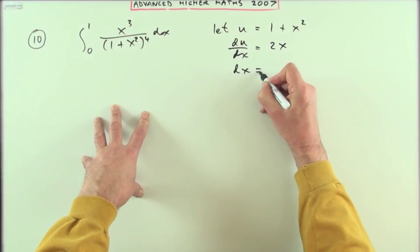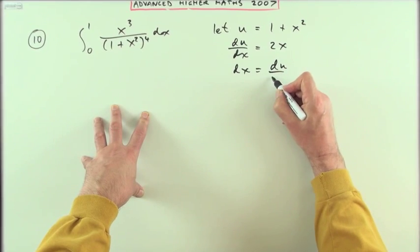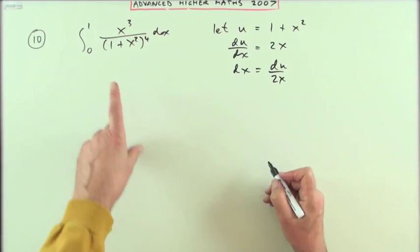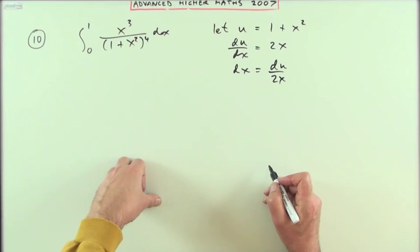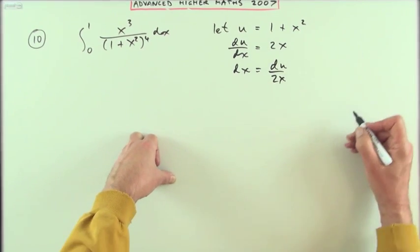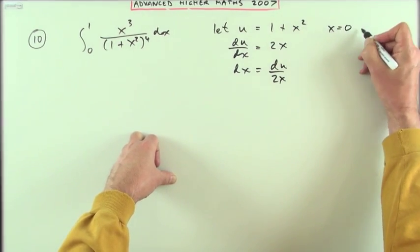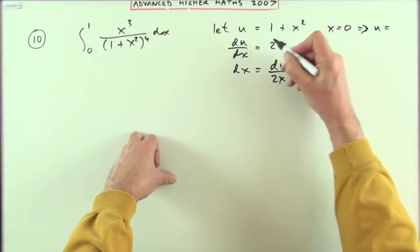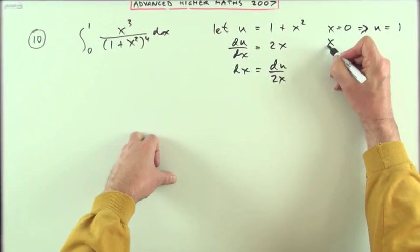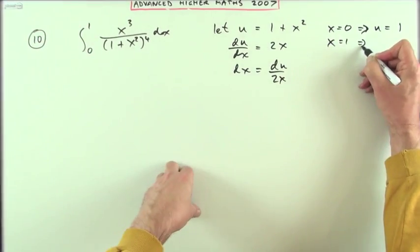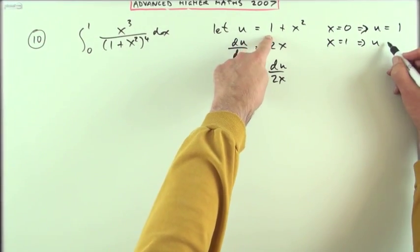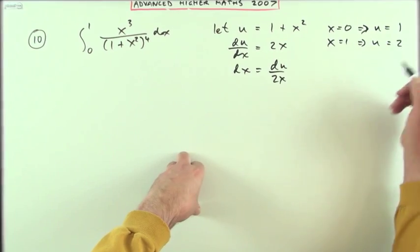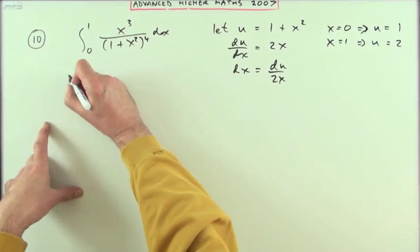There's some limits here, might as well change those at the same time using this. If x equals 0, that means that u would equal 1 plus 0, which is 1. And if x is 1, that means that u would be 1 plus 1, which is 2.